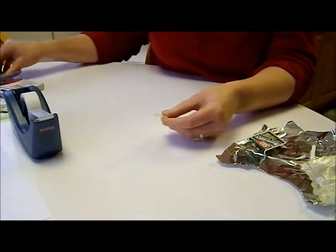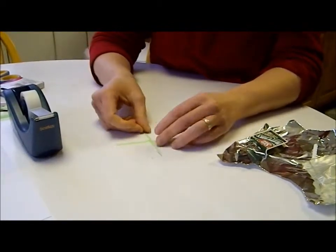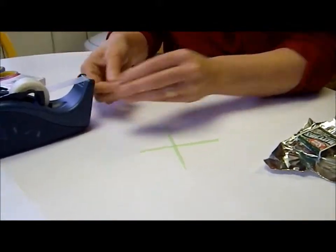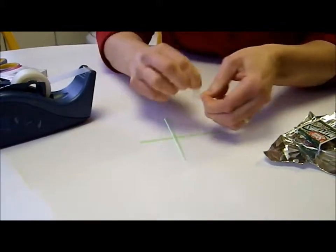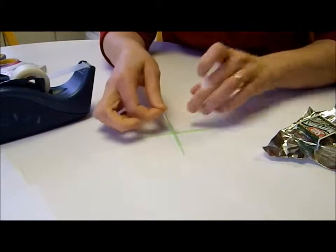And then we want to make a little X that will be a base for the hot air balloon. So I'm going to take a little piece of tape and I'm going to rip it in half because we want to always minimize the tape.